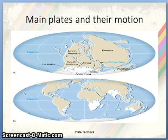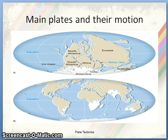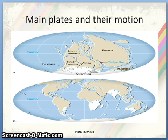The main plates and their motions: it is stated that the whole landmass was once joined together, forming a mega-continent called Pangea, which then separated into two landmasses — Eurasia and Gondwanaland. This also created a mega ocean called Panthalassa.